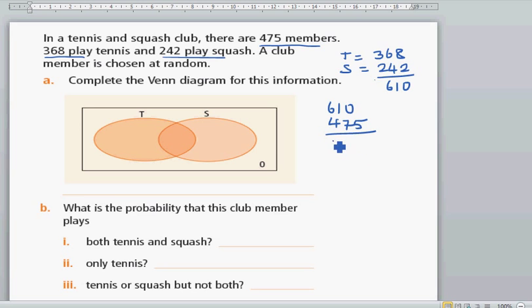So there are 135 people who play tennis and squash.